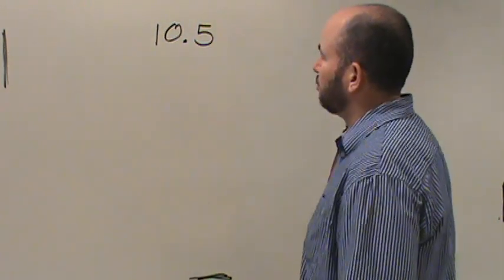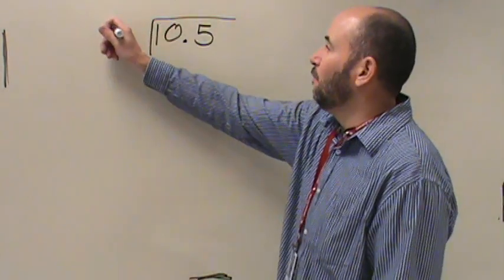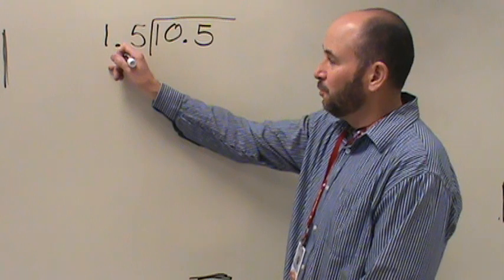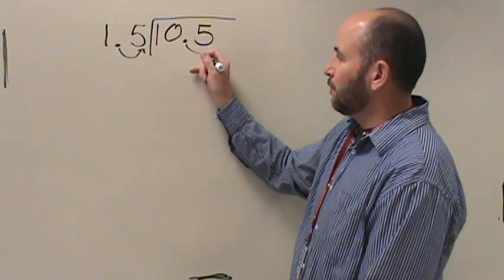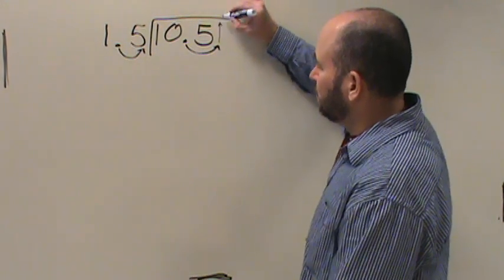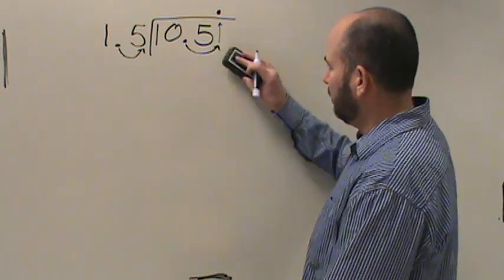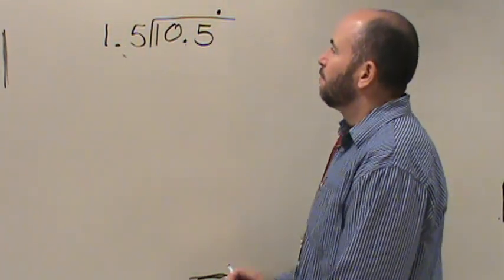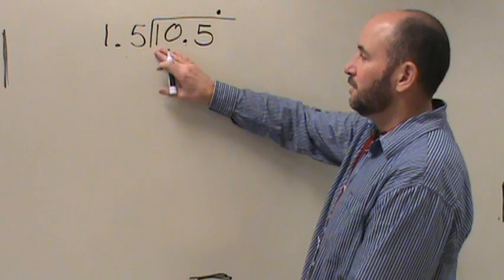I'm going to take this part of the problem and switch it around a little bit. My 1 and 5 tenths is right here. Now I have to bring my decimal point over one place to make that a whole number. I have to bring it over here — check and make sure you did that. Then it has to go straight up into the quotient, and then you're ready to divide. Now that I've moved my decimal point, I can ask myself how many times does 15 go into 1 — it doesn't. How many times does 15 go into 10 — it doesn't.